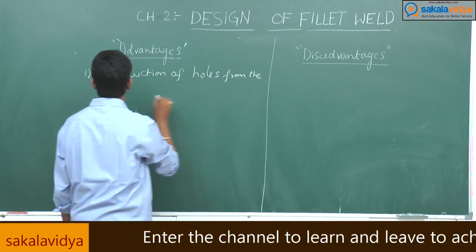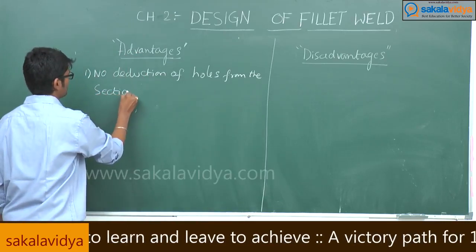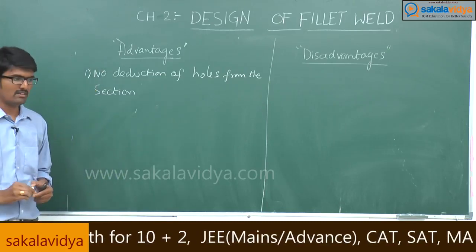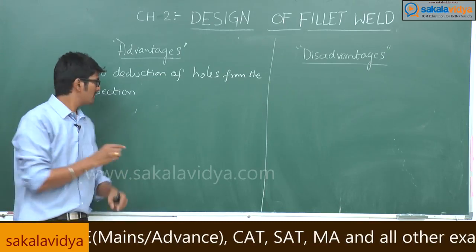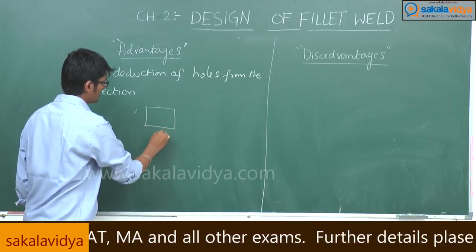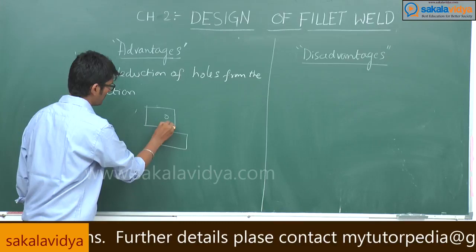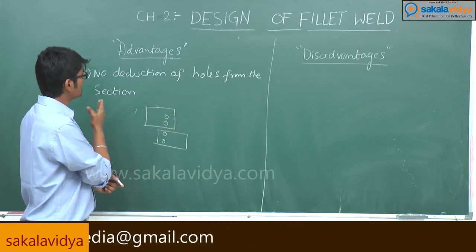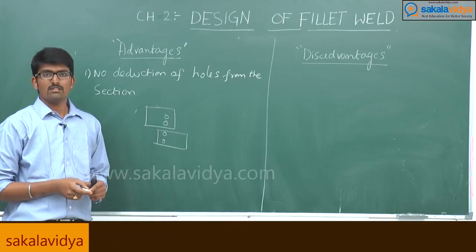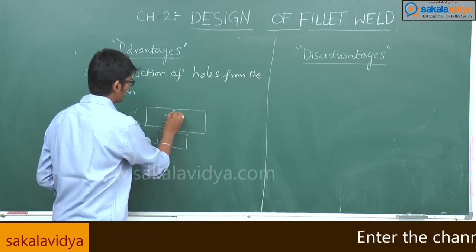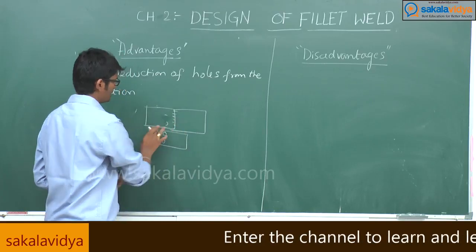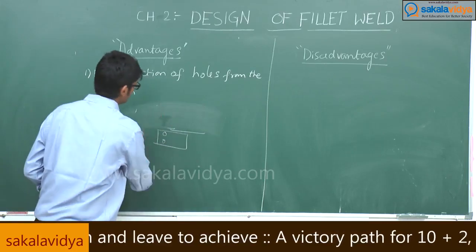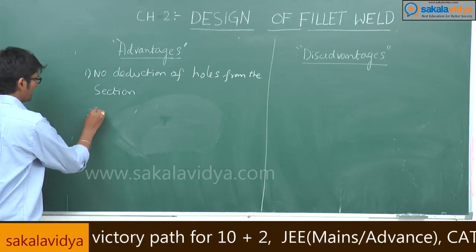The first advantage is no deduction of holes from the section. For example, if we have two metal plates and need to join them, normally we would need to make a hole to place a bolt or rivet. But with welding, we can directly weld the plates together — so no holes are needed.